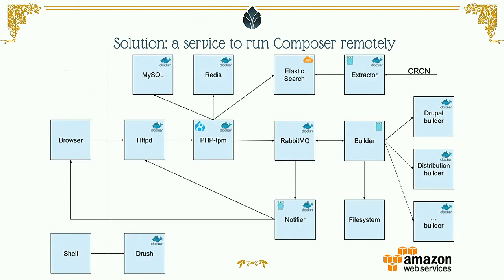This is the diagram of our application. We have Docker containers for Apache, PHP-FPM, MySQL, and Redis for Drupal 8, and Elasticsearch. When a user requests a build of a project, we enqueue requests in RabbitMQ and then use some Go and Docker images to build the website. Then we have a notifier that communicates back to Drupal via a REST endpoint and to the browser via WebSocket.